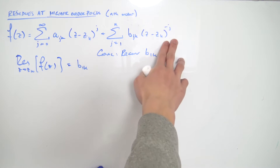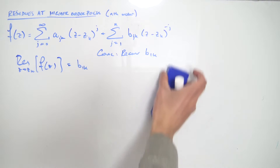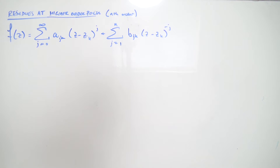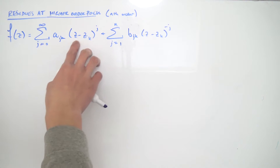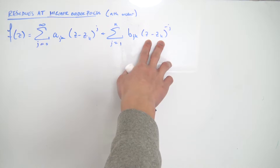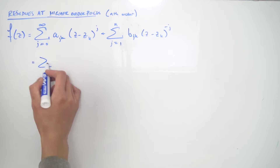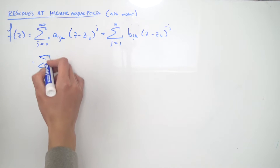In the case where we have an nth order pole, it's a little bit tricky to recover b_sub_1k because we have a lot of terms on the principal part. If we let z equal z_k on the analytic part we get zero, but the problem is we're going to have zero on the denominator because we have negative powers. So I'm going to rewrite this to make things easier to explain.